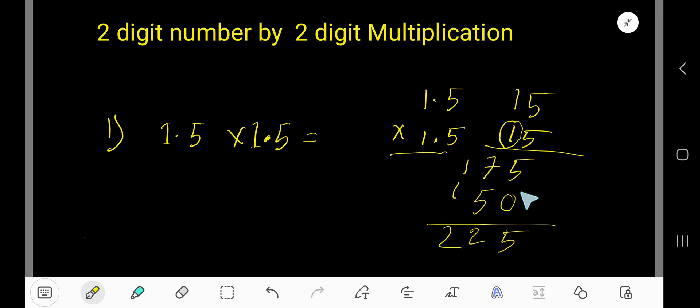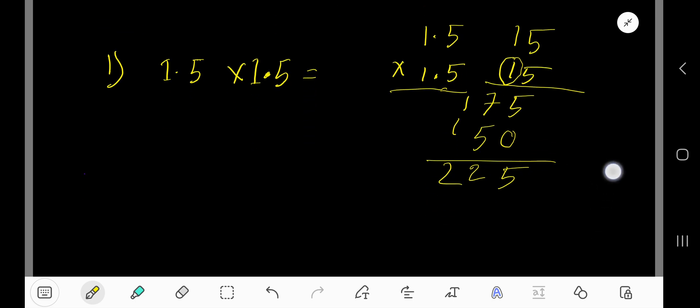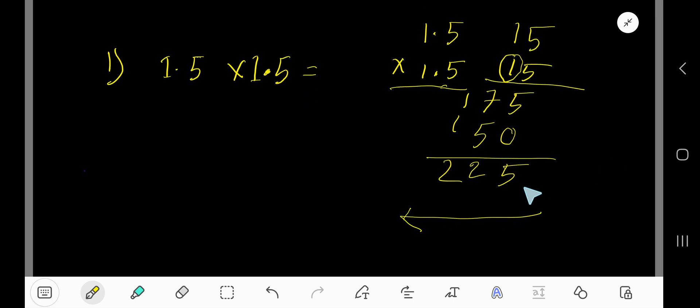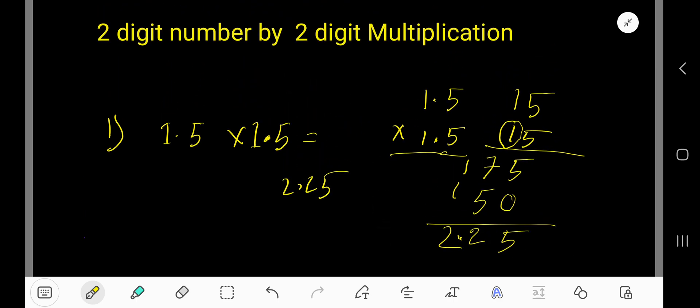Now you have to place the decimal, right? After a decimal here we have one digit and here we have one digit. Totally we have two digits. Now you have to start from right to left and you have to place decimal two digits to the right to left. Two digits to the left: one, two. So two point two five. The answer is two point two five.